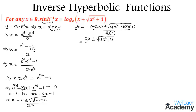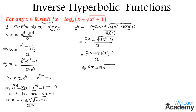The equation becomes 2x plus or minus under root of 4x squared plus 4, divided by 2. Taking 4 as the common factor gives 2x plus or minus under root of 4 into x squared plus 1, divided by 2. That implies 2x plus or minus 2 times under root of x squared plus 1, divided by 2. Taking 2 as common factor gives 2 into x plus or minus under root x squared plus 1, divided by 2, and the 2s cancel, giving the root for e power y.